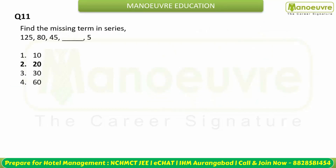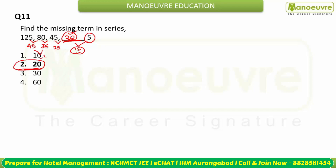Missing series: 125, 80, 45, __, 20. Differences: 125−80 = 45, 80−45 = 35. The difference is decreasing by 10 each time. Next difference = 25, so 45 − 25 = 20. Check: 20 − 15 = 5, and double difference reduction confirms it. The answer is 20, option two.